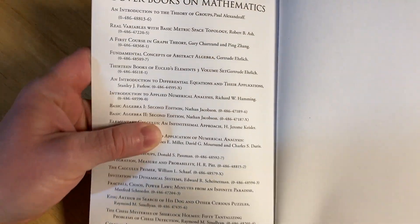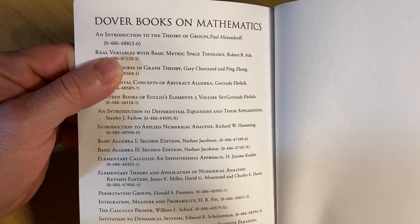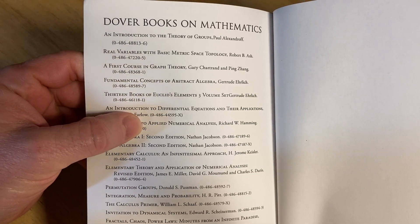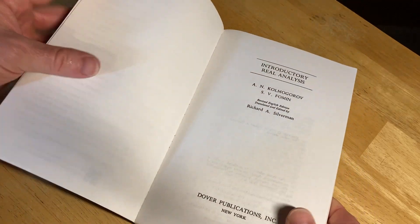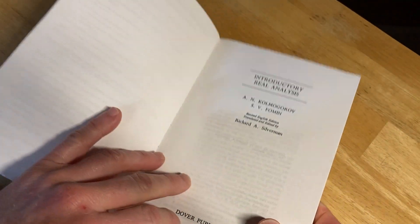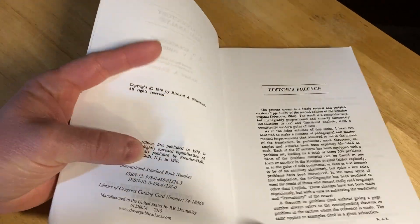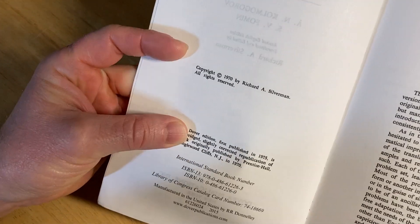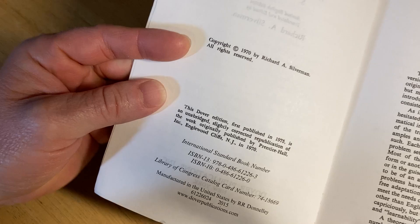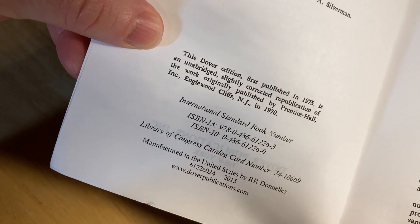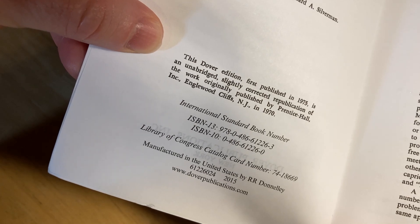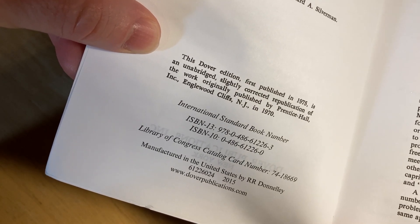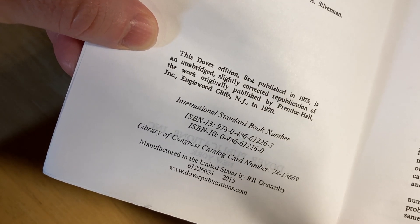So let's open it up and take a look. Here you can see some of the other Dover books on mathematics. Again, they reprint books that you've probably never heard of, which is really cool. And it's translated here by Silverman, as you can see. I have other books translated by Silverman. Copyright 1970, Richard A. Silverman. This Dover edition, first published in 1975, is an unabridged, slightly corrected republication of the work originally published by Prentice Hall, Inc., Englewood Cliffs, New Jersey, in 1970.